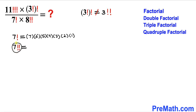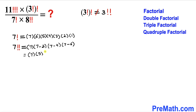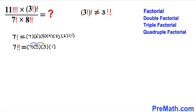Now let's take care of 7 double factorial. That's going to be 7 times (7 minus 2), and we keep subtracting 2, giving us 7 times 5 times 3 times 1. The common difference between consecutive numbers is 2, since we are dealing with a double factorial.